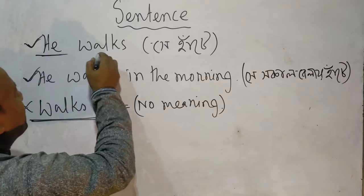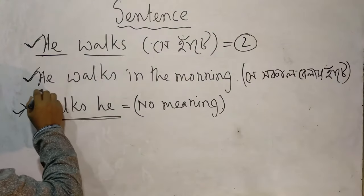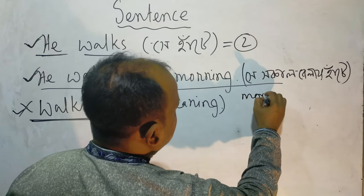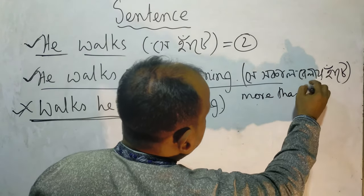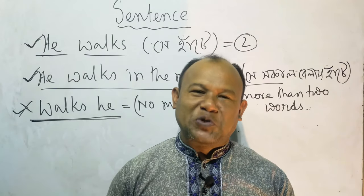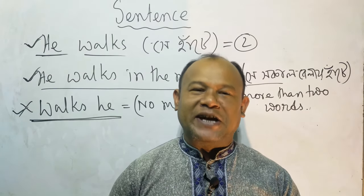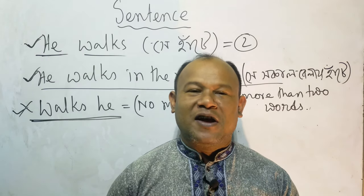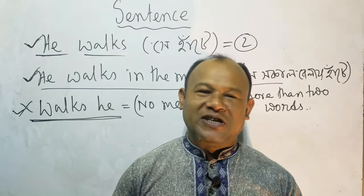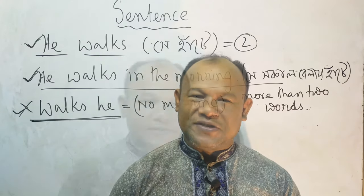How many words here? Two words. How many words here? More than two words. Traditionally, we say that when two or more than two words sitting side by side express meaning, the very group of words containing a subject and a verb is called a sentence.